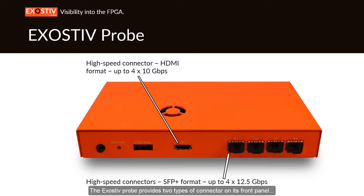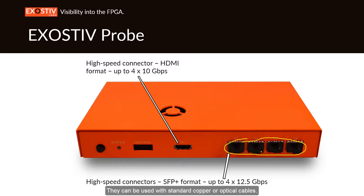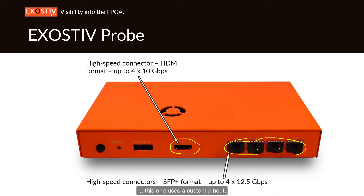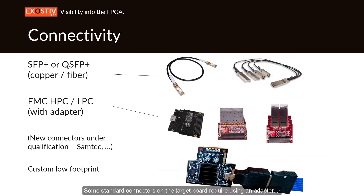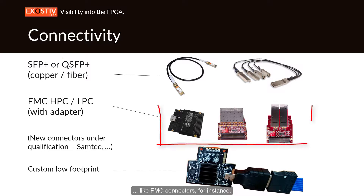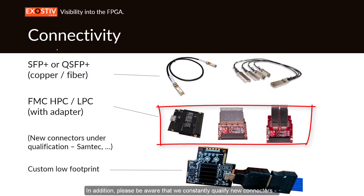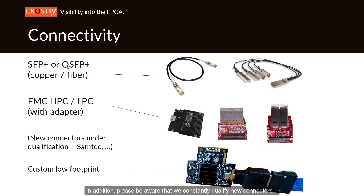The Exhaustive probe provides two types of connectors on its front panel. First, a group of four SFP+ cages, one for each transceiver, which can be used with standard copper or optical cables. There is also a more compact yet slower HDMI-type connector that uses a custom pinout. Some standard connectors on the target board require using an adapter, such as FMC connectors. Please be aware that we constantly qualify new connectors — contact us to know more.